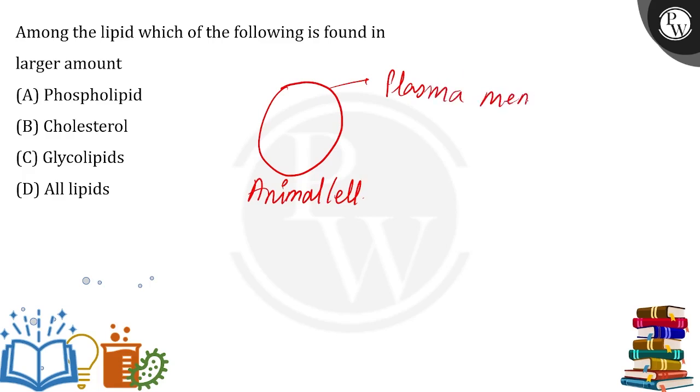We are talking about the plasma membrane, which is also called as plasma lemma or the cell membrane. Now this plasma membrane consists of phospholipids.